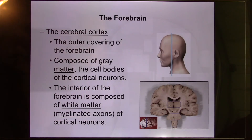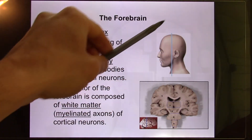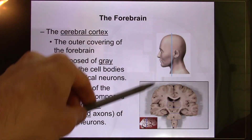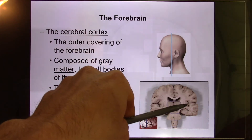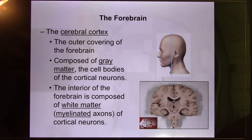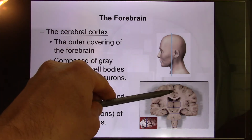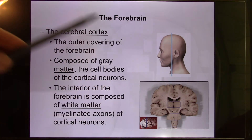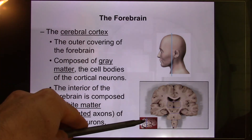Humans have a very well-developed cerebral cortex — that's the outer layer of the brain. It looks gray because that's where the cell bodies are located — the gray matter. And the human brain has a lot of wrinkles, which are actually good wrinkles.